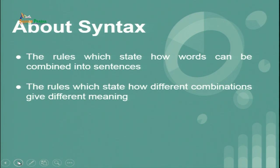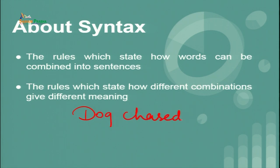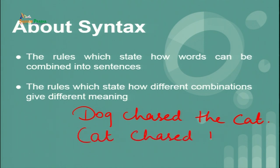For example, if I write 'dog chased the cat' and in the same way I write 'cat chased the dog,' the point I am trying to make is that with a simple change in the arrangement of words you find a difference in meaning as well. 'Dog chased the cat' means the dog is the subject and the cat is the object. But when we rearrange the sentence and put the subject in place of the object, the meaning also gets changed.